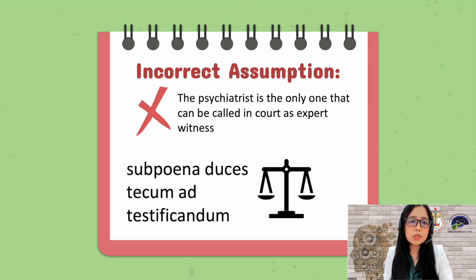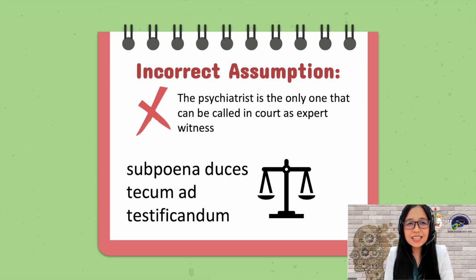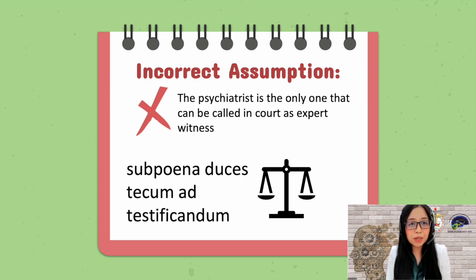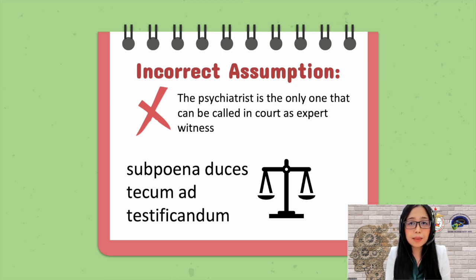Another misconception is that the psychiatrist is the only one who can be called to court as an expert witness. We often receive what is called a subpoena duces tecum ad testificandum — the duces tecum part means we are to produce documents, and the ad testificandum part means to give testimony to the court. But it is not only the psychiatrist who can receive these kinds of subpoenas; other personnel such as psychologists and medical records staff may also be called to assist the court.